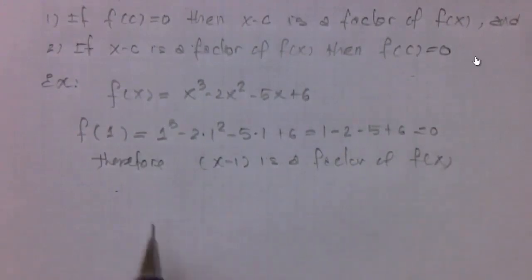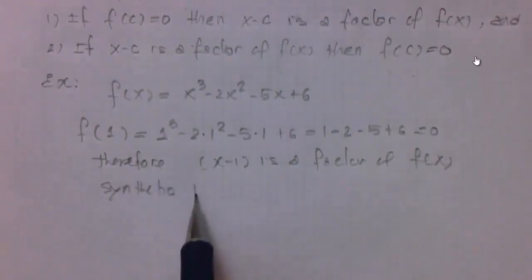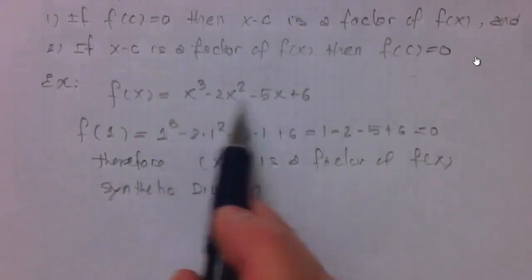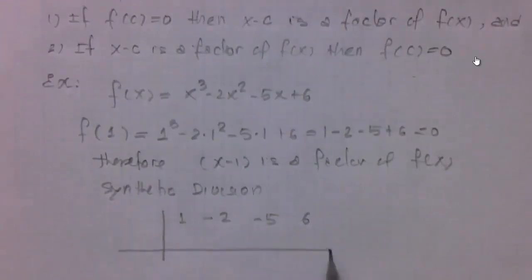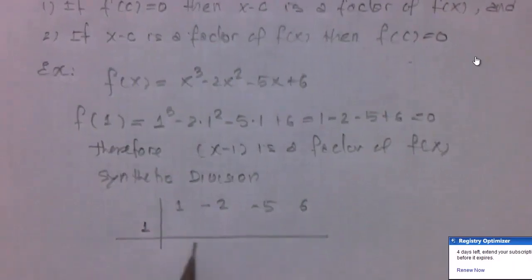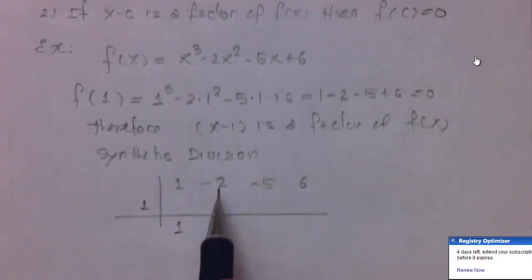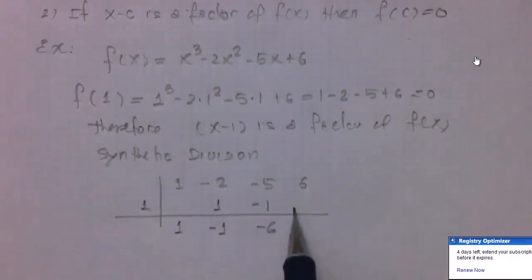How do we use that? We can use synthetic division. We take the coefficients from the polynomial: 1, negative 2, negative 5, and 6. We test the number 1. Copy 1 down — one plus nothing is 1. One times one is 1. Negative two plus one is negative one. One times negative one is negative one. Negative five plus negative one is negative six. One times negative six is negative six. Six plus negative six is zero.